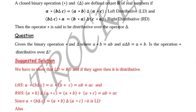We replace star by multiplication and triangle by addition, since A star B equals AB and A triangle B equals A plus B. So A times (B plus C) — since B plus C are not like terms and cannot simplify, we expand the bracket to get AB plus AC.